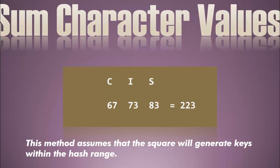Another approach, especially if we are considering hashing by characters, is to take the ASCII value of those characters. For example, with 'CIS', we take the sum of those characters: 67 plus 73 plus 83 gives us an index value of 223. Again, if the characters you're inserting are similar, you're going to end up with a lot of collisions.